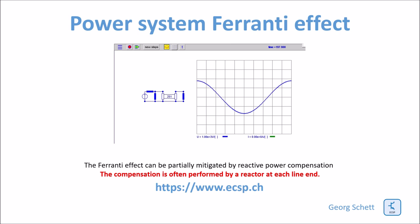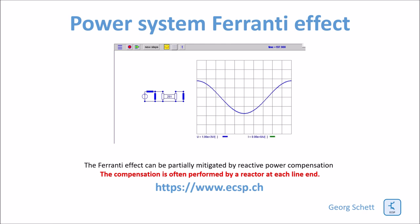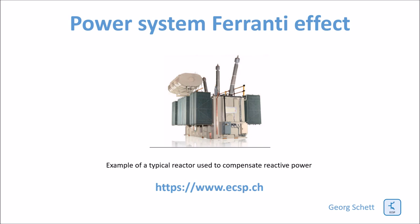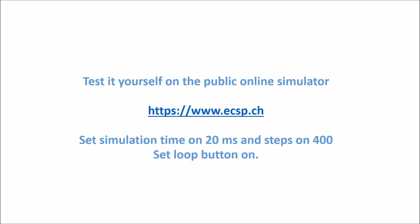To reduce the Ferranti effect and overvoltages at the line end, I would install a reactor at the line end, switched on either always or just under low load conditions. Normally I would also place reactors at both the beginning and end of the line, subdividing the reactive power compensation rather than concentrating it at one end. In the simulation you can now see what happens when varying the reactors at both line ends. Here you can see an example of such a high voltage reactor placed at one or both line ends. You can go to the simulator and experiment with it yourself, as it is a straightforward simulation.